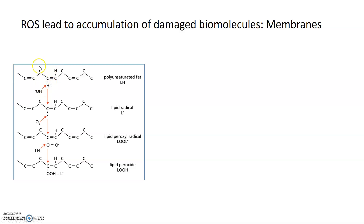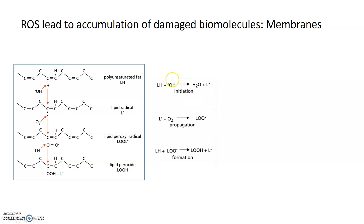You can see here ROS attacking this particular part of the polyunsaturated fat, targeting the double-bonded carbons. In the process, it generates what are known as lipid radicals and ultimately generates a compound called a lipid peroxide, which is harmful to biological membranes. Once you generate one lipid peroxide molecule, you've also generated another radical, which can then initiate the further formation of lipid peroxides — creating a cycle where once some lipid peroxides form, it becomes easier to generate even more of them.